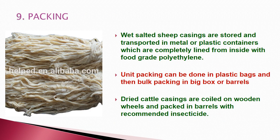For packing, sheep and goat casings with wet salting are packed in metal or plastic containers with an inner polyethylene layer; unit packing can also be done in plastic bags, then bulk-packed in boxes or barrels. Dried cattle casings are coiled on wooden wheels and then packed in barrels with recommended insecticides.